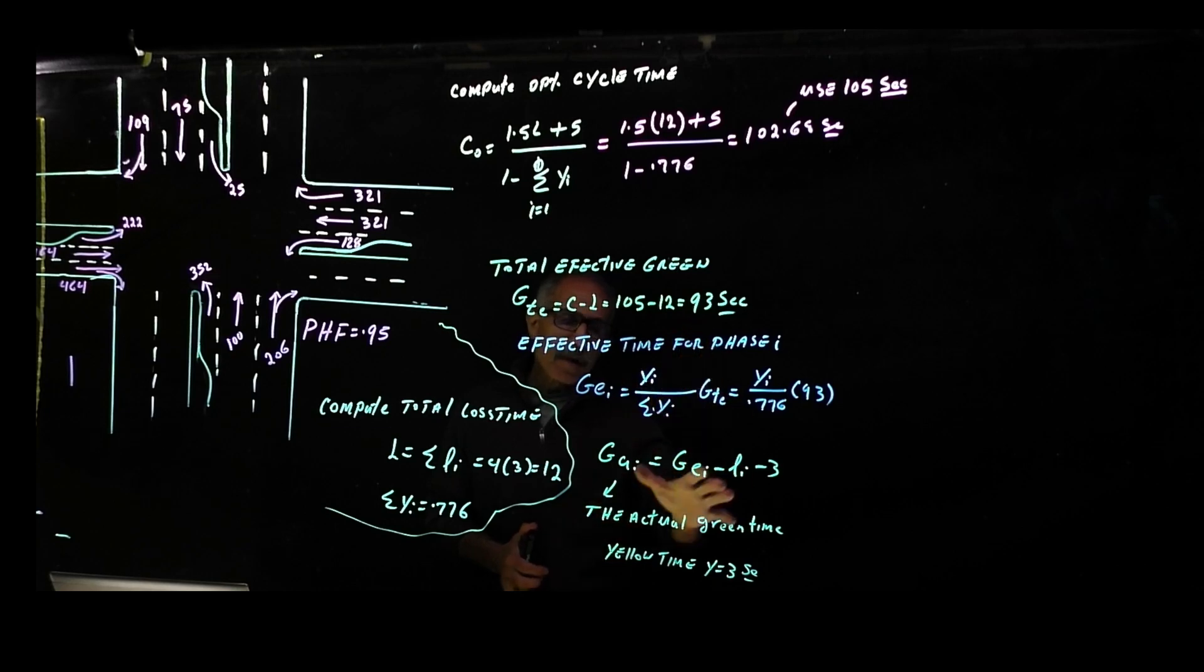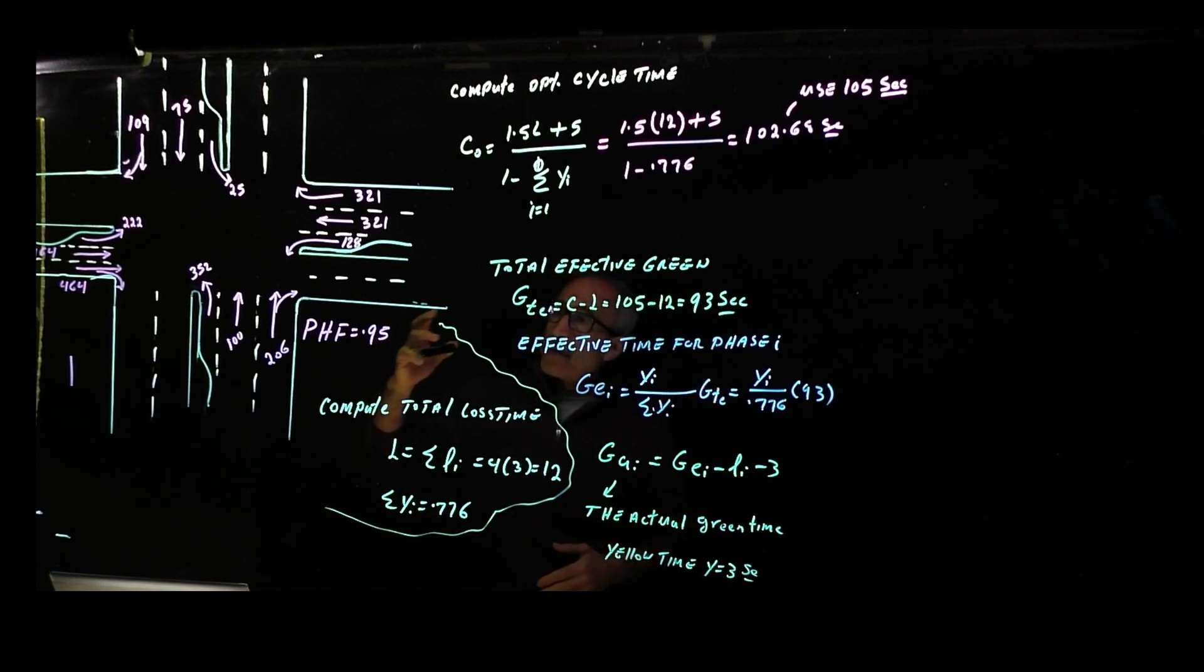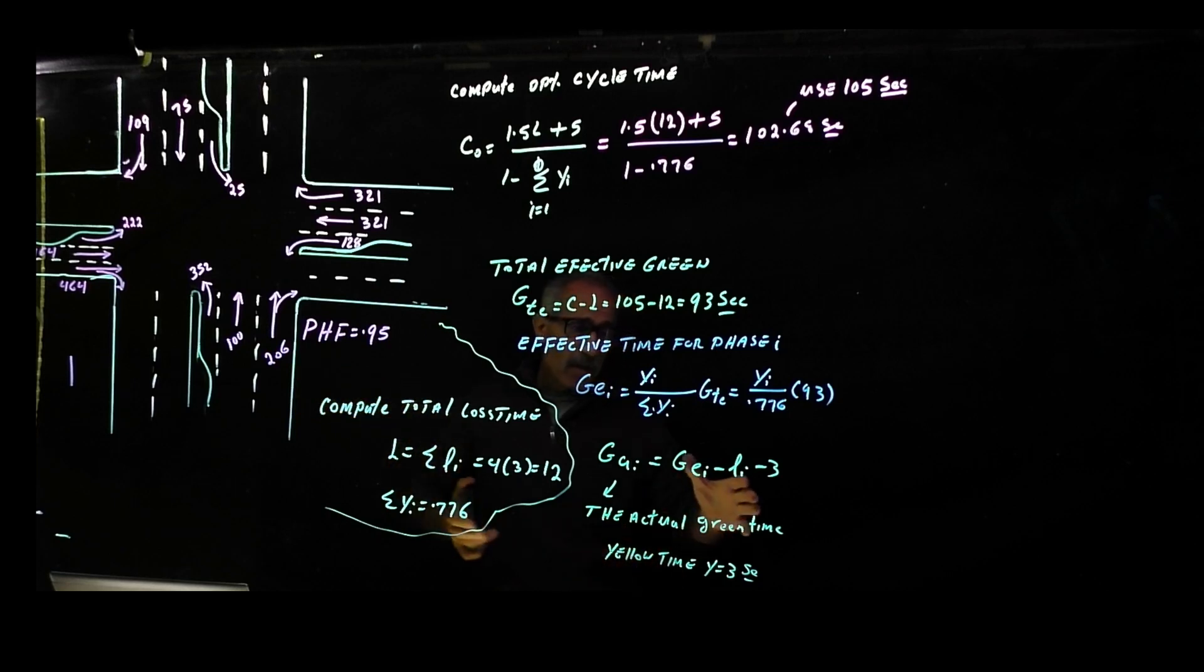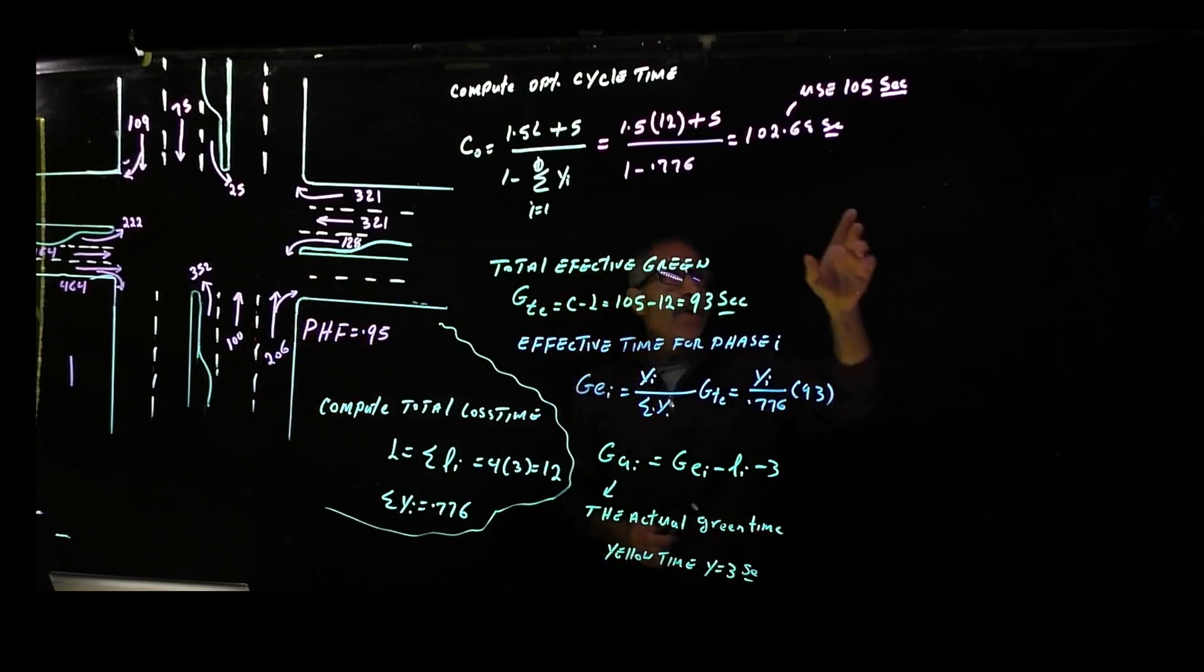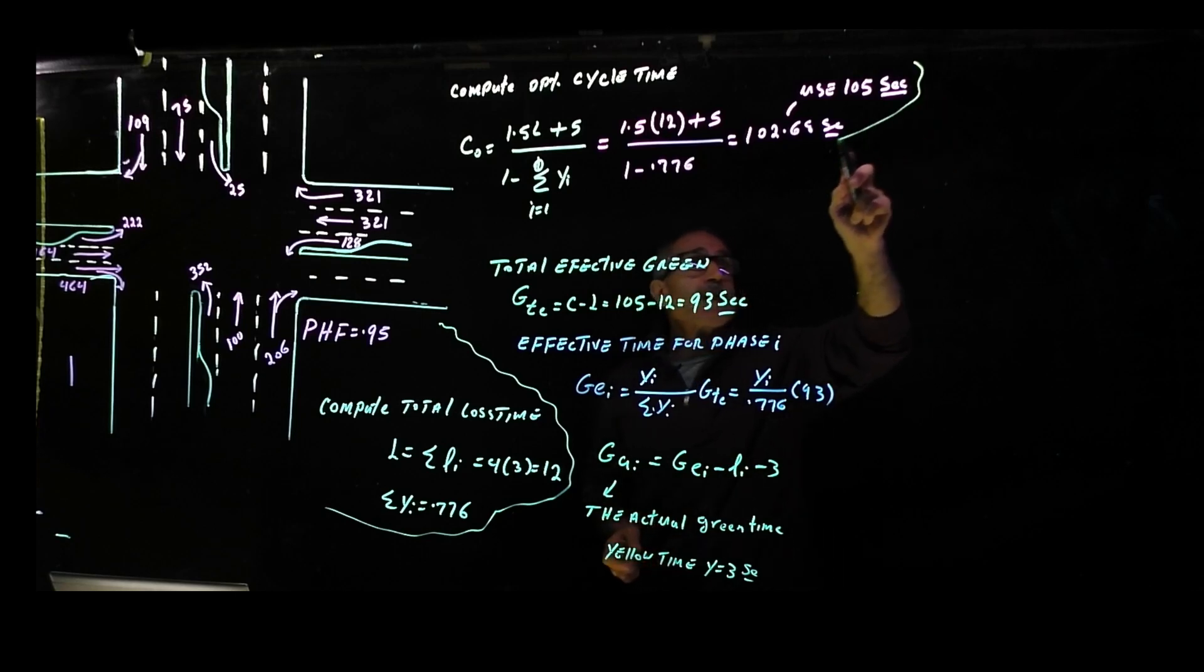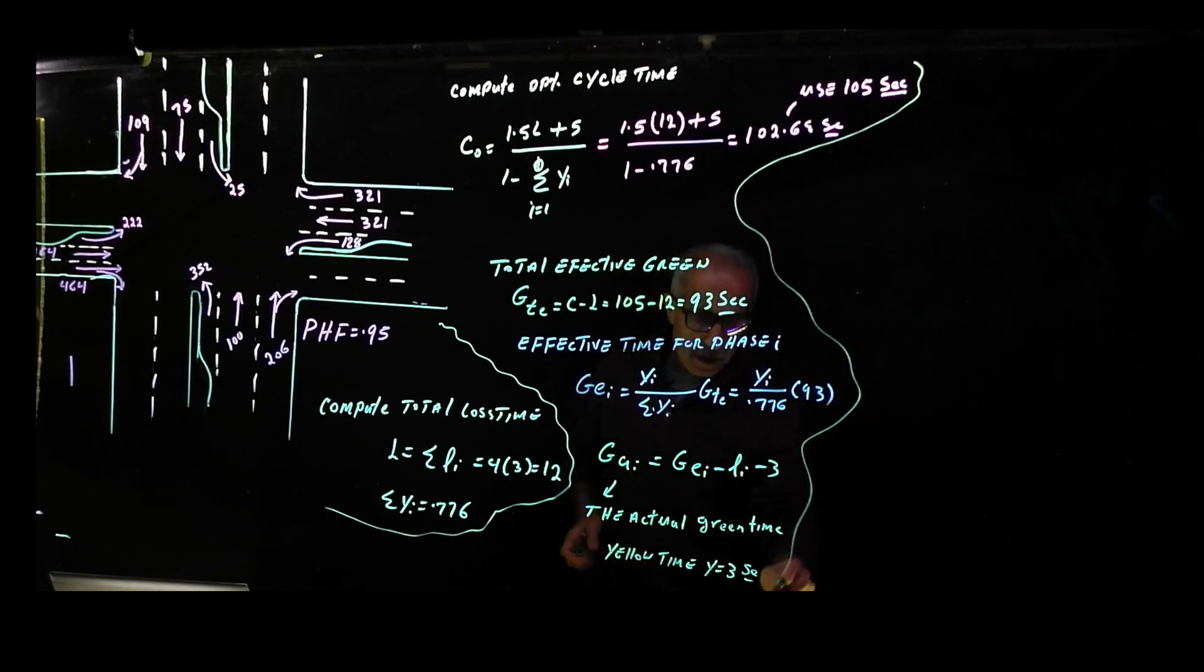The actual green time is given by Gi minus Li minus the yellow time. The yellow time was given to us as 3 seconds, and the lost time was 3 seconds. So these two numbers are both going to be 3 seconds.